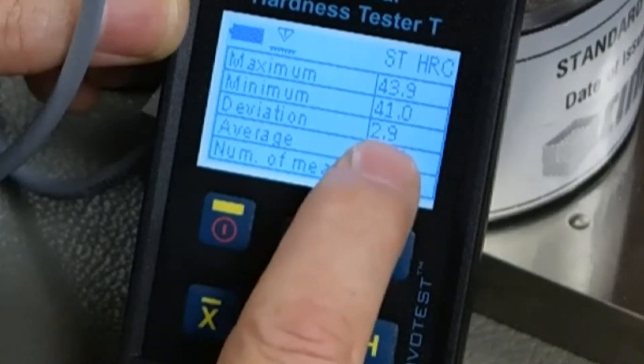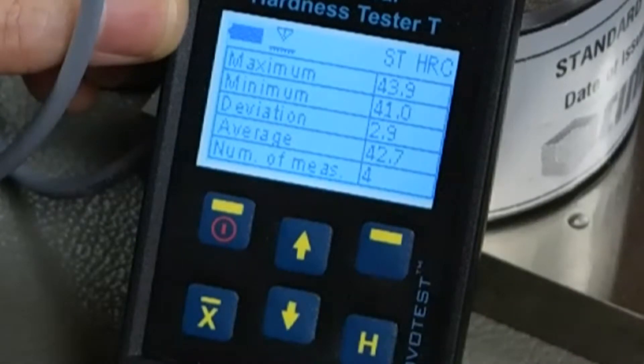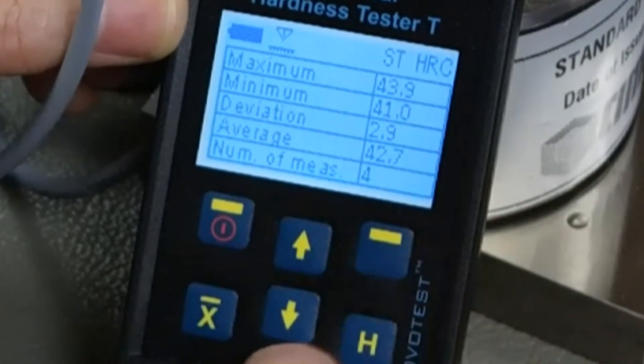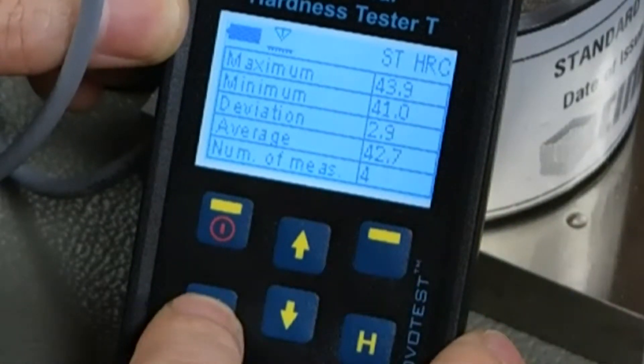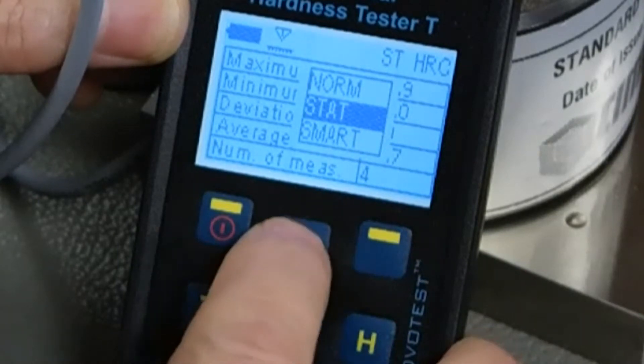The deviation, maximum minimum was 2.9. That was because of that erratic very first one and so on. And if I just back out of this and go back to normal.